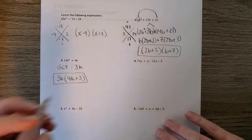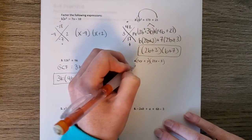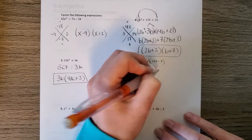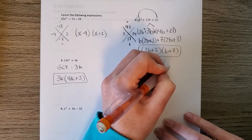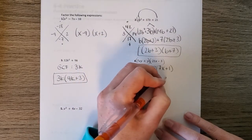And number 4 is 4 terms. So we can use grouping. And then factor out a y and get 7x plus 1. And over here factor out a negative 3 and we get 7x plus 1. And then that would give me 7x plus 1, y minus 3.